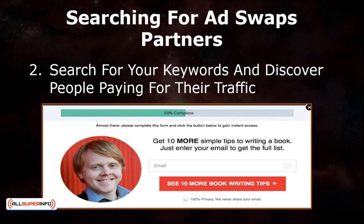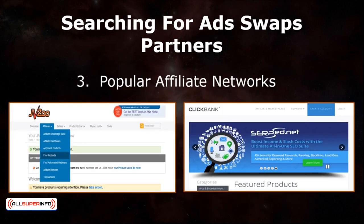An indicator of this is if you see 'subscribe to my newsletter' or 'enter your email address for more information.' These are your potential ad swap partners. Third, you can search for popular affiliate networks for partners, such as ClickBank.com or JVZoo.com. Once you're in the network, find products that are included in your target market and contact the owners.